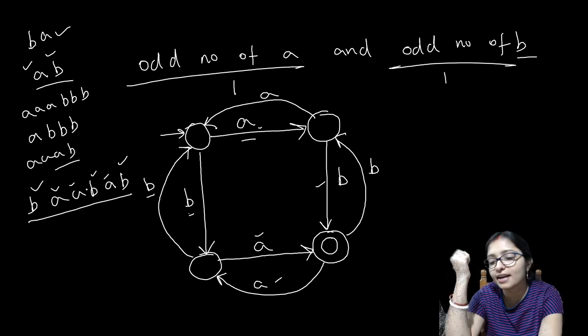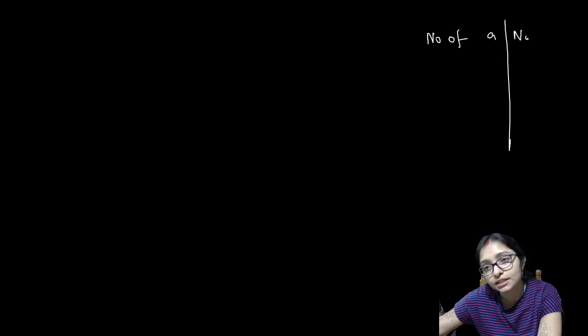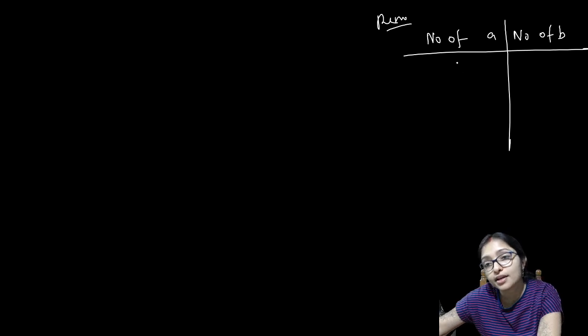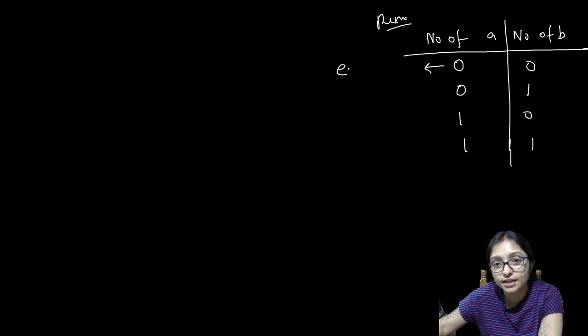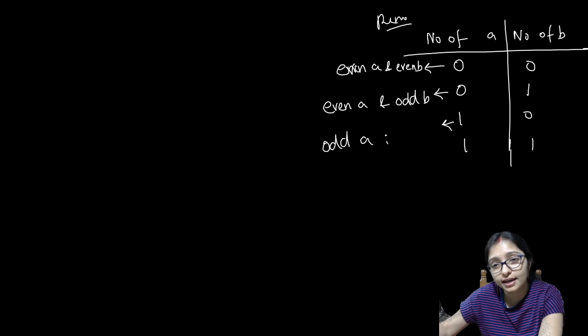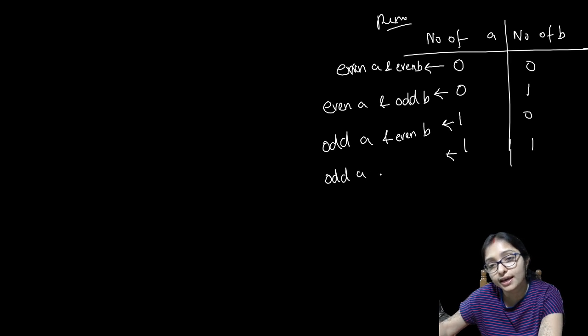Now what is the trick? You have to make the combination of number of A and number of B using remainders. The remainder combinations are: 0,0 means even A and even B; 0,1 means even A and odd B; 1,0 means odd A and even B; 1,1 means odd A and odd B.